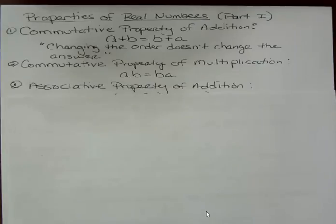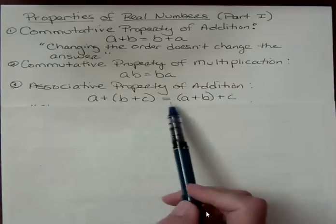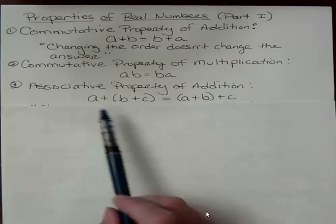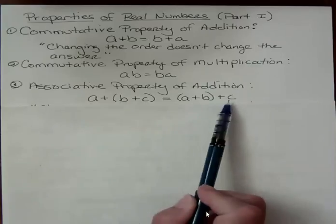We're going to look at these and then we'll look at some problems where we use them. The associative property of addition says that if we have A plus B plus C, that would equal A plus B plus C. So what we changed here is not the order A, B, C, A, B, C. That did not change.